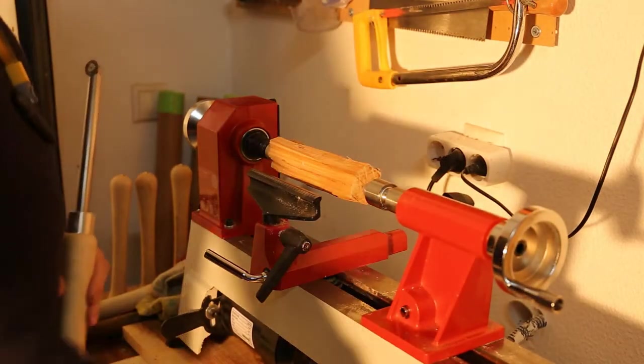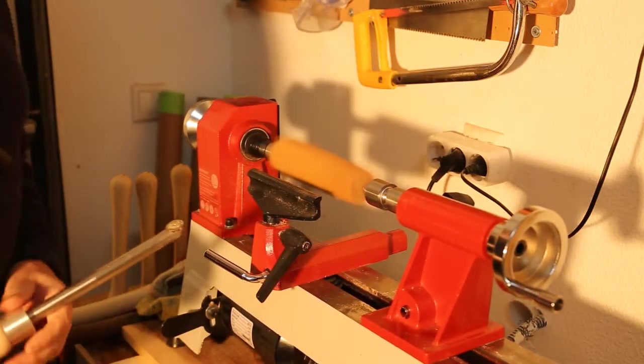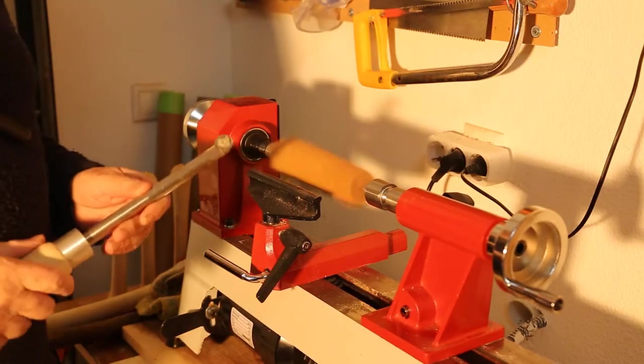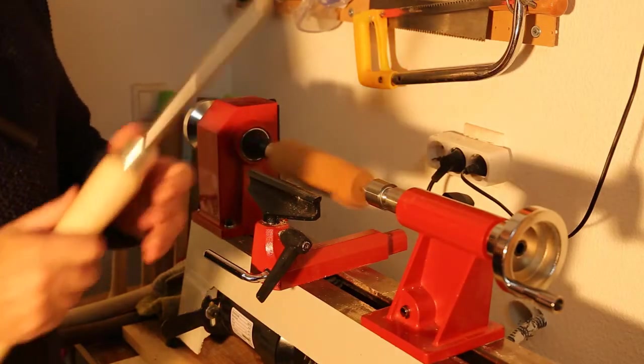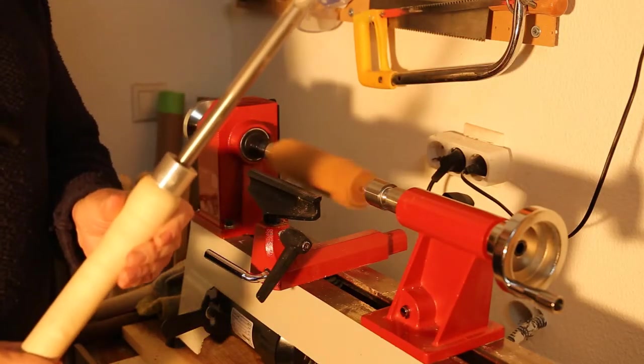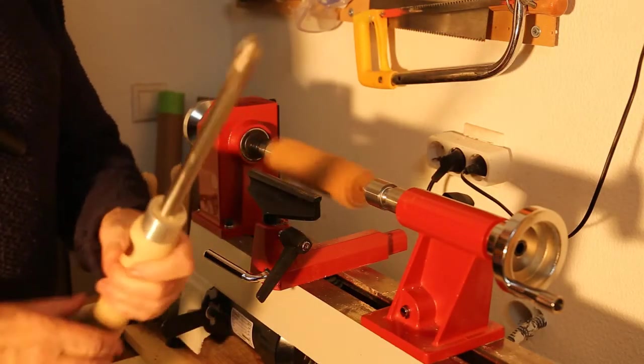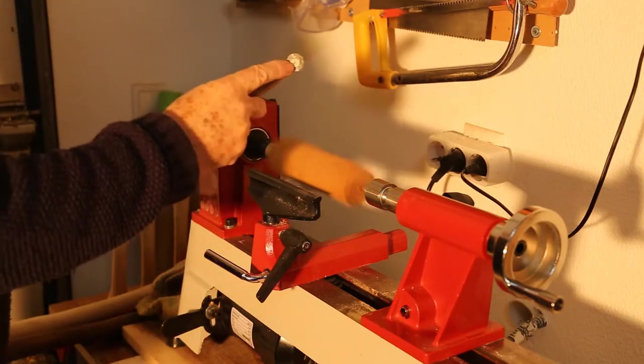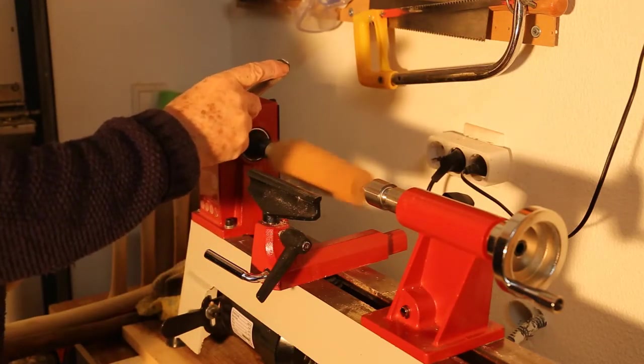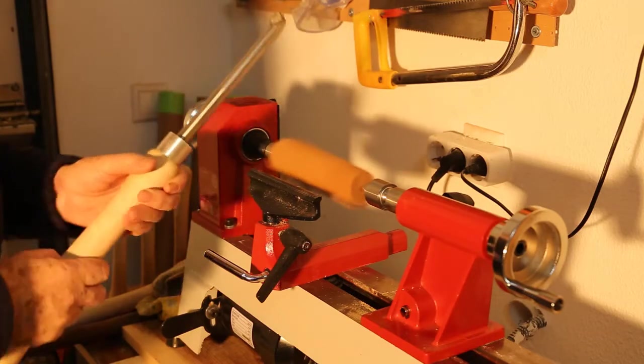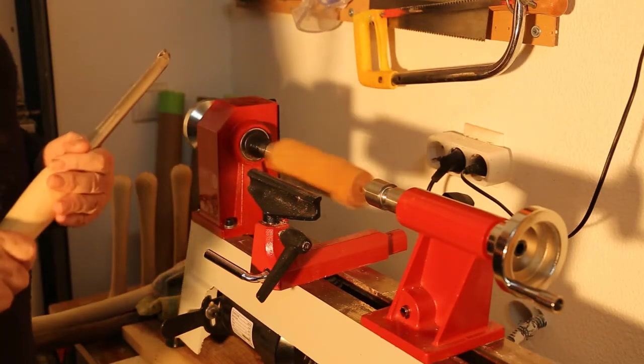I switch on the lathe. It spins at a speed of around 1000 RPM. This is a carbide lathe chisel. On the end is a very sharp piece of metal made from carbide which is going to cut the wood.